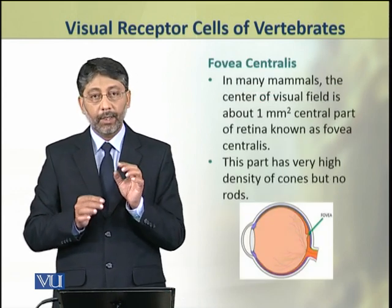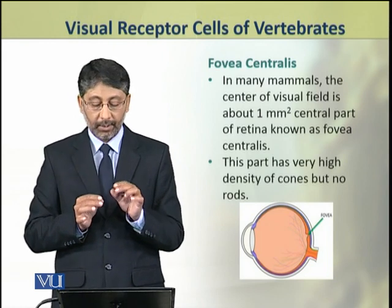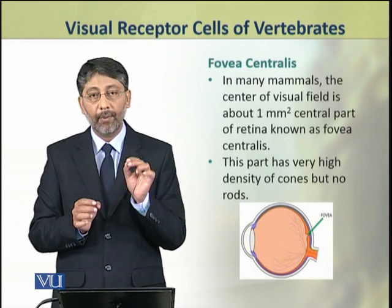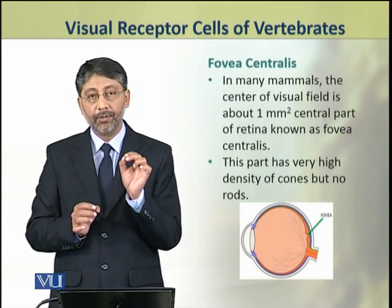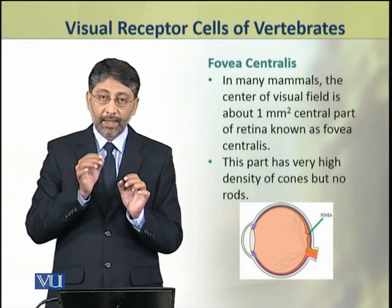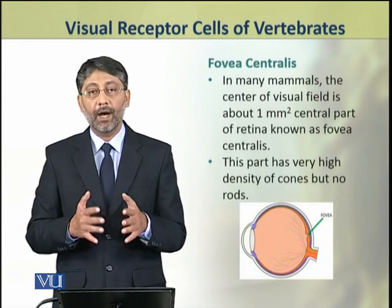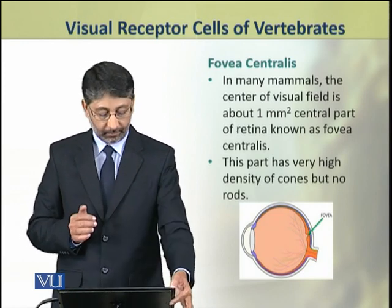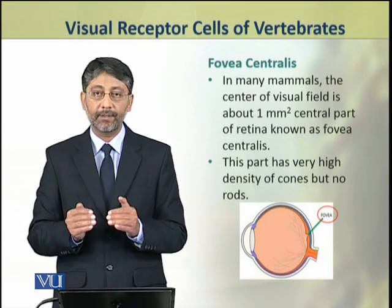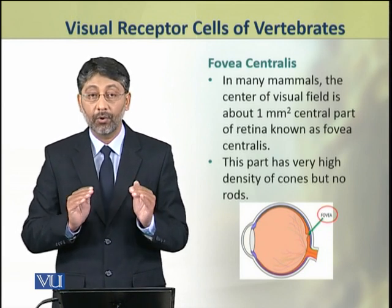In many mammals, including humans, the center of the visual field corresponds to about a 1 mm square central part of the retina. This central part of the retina is known as the fovea centralis. This part has a very high density of cones but has no rods, providing very detailed information about the visual field.